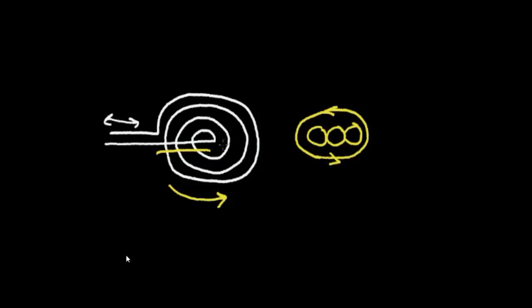Now notice that in the cross section of the three wires at the right, the current is going in the opposite direction. So in these three wires, the magnetic field will be reversed. It will go clockwise in this direction.